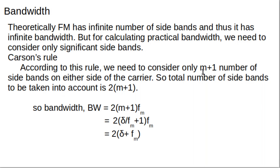According to Carson's rule, we consider M+1 sidebands on the upper frequency side and M+1 sidebands on the lower frequency side, giving 2(M+1) total significant sidebands. The bandwidth is then 2(M+1)·FM. Substituting modulation index M = ΔF/FM, this simplifies to: Bandwidth = 2 × (maximum frequency deviation + FM).